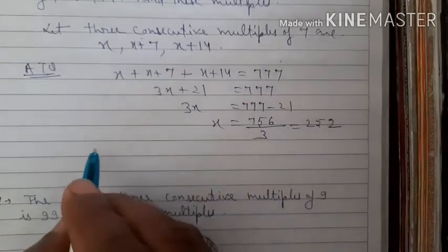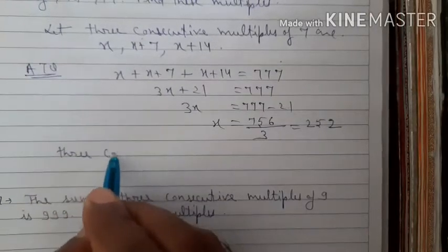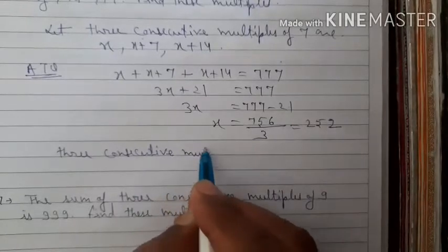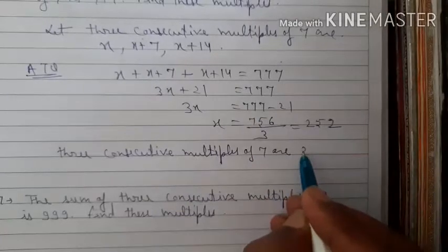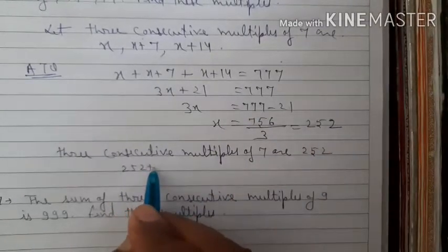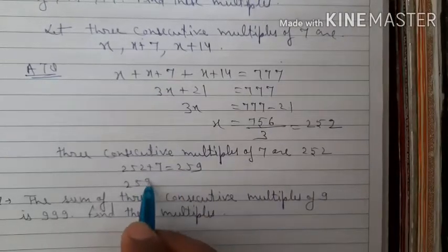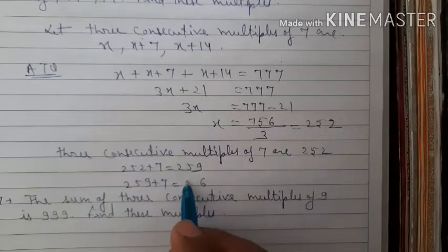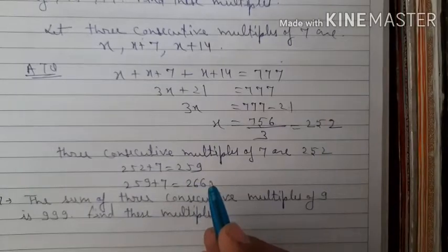So x equals 252. Therefore the 3 consecutive multiples of 7 are: 252, then 252 plus 7 equals 259, and 259 plus 7 equals 266.